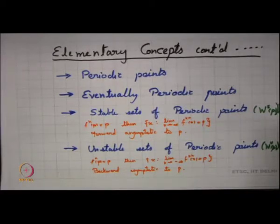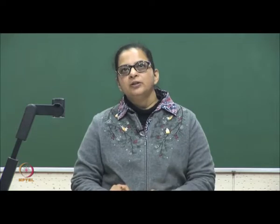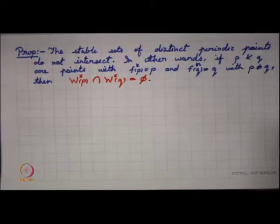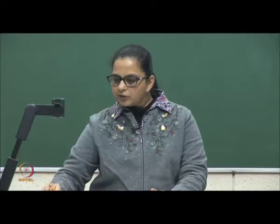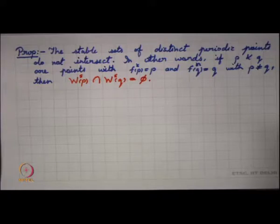With this recalling of the definitions, let us now look into the properties. Today we will be doing the first proposition in this course, regarding the stable set. The proposition says that the stable sets of distinct periodic points are disjoint. That means, if p and q are two periodic points where k is the period of p and n is the period of q, then the stable set of p and the stable set of q are disjoint.